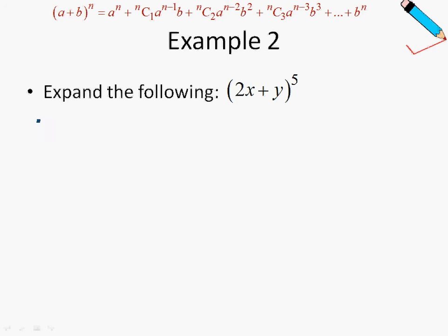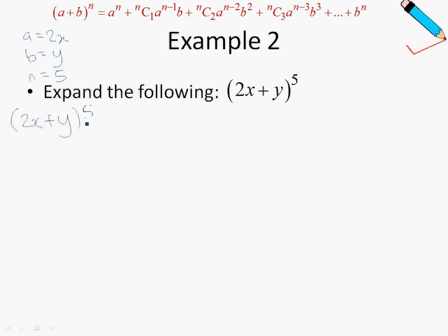Let's move on to the next example. In this example, let's identify: a is 2x, b is y, and n is 5. I'm just going to show you the first 3 terms, and then perhaps you can progress further on your own. So we have 2x plus y to the power of 5.